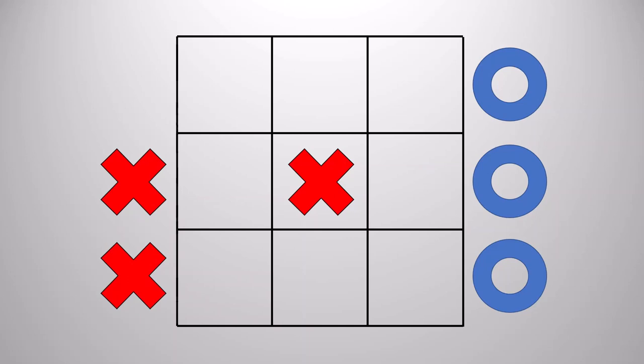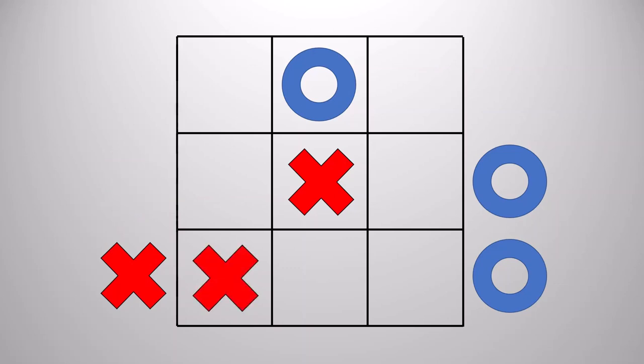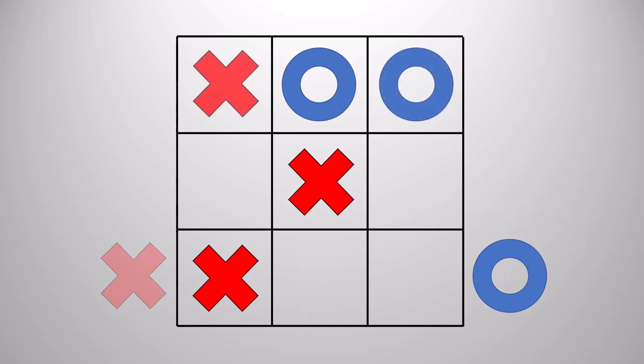The other case to consider is what happens if your opponent begins by placing an O in a center edge slot. Let's think about this one. If you follow it up by placing an X in a corner like that, your opponent is obligated to move up there.